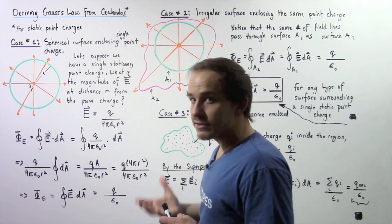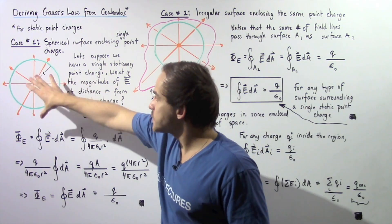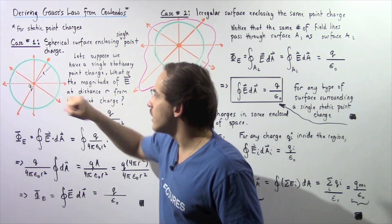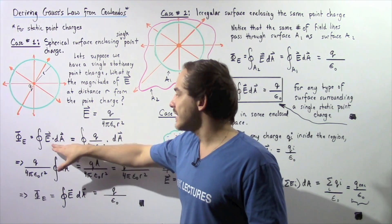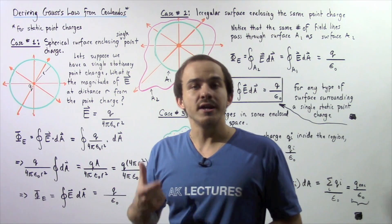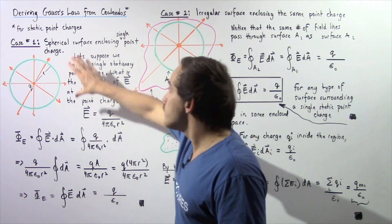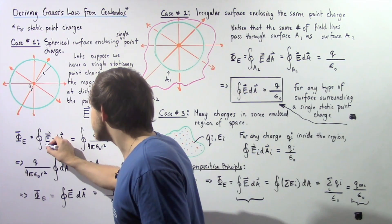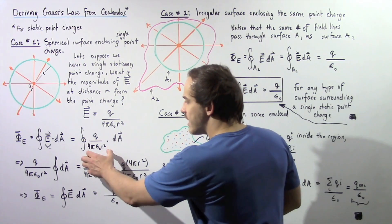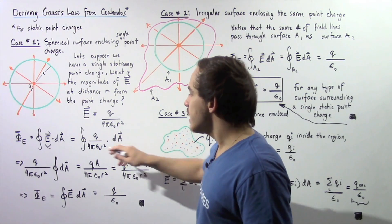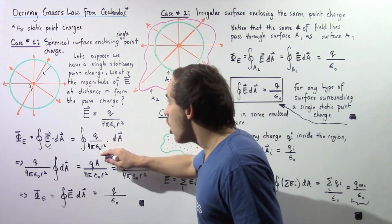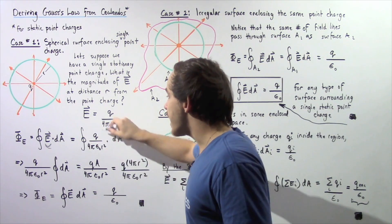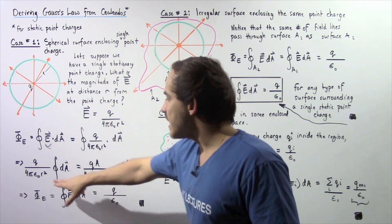Now let's state the electric flux. The net electric flux for this case is equal to the closed integral of the dot product of the electric field vector E and the infinitely small area element dA. That is, by definition, what electric flux is. For this case, our electric field is given by Coulomb's law, so we replace E with that expression. Notice Q, 4π ε₀, and R are all constants, so we can bring the entire fraction outside the integral.